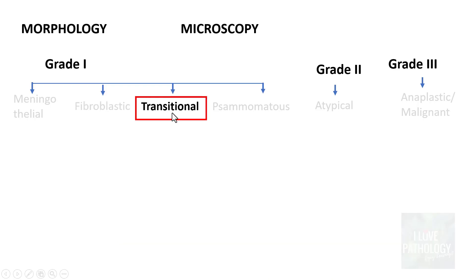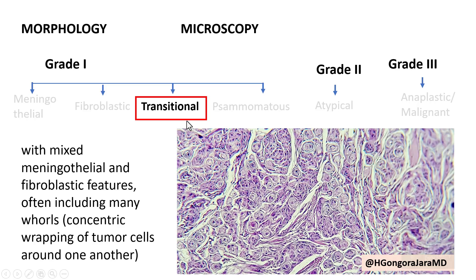The third important type is the transitional meningioma, which has a mixture of meningothelial and fibroblastic features. Most importantly, in this type you find lots of whorl-like structures — concentric wrapping of tumour cells around one another. This is a very typical feature of the transitional type of meningioma.